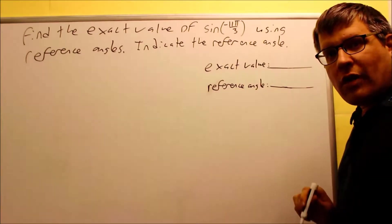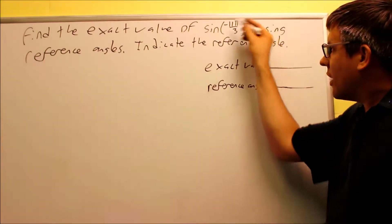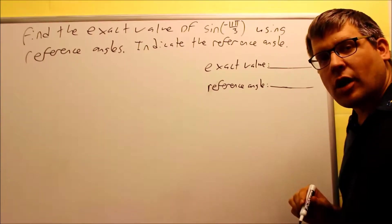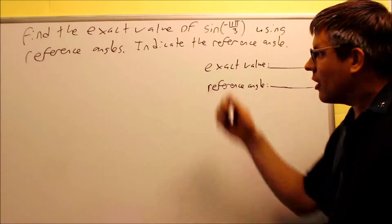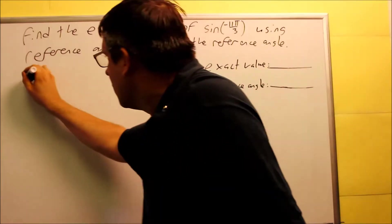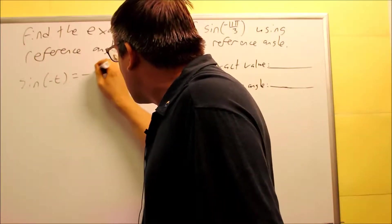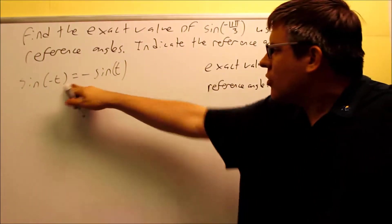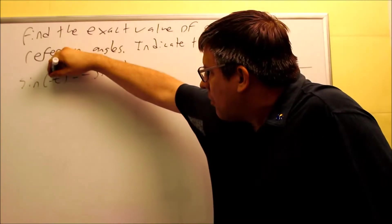Another one where you have a negative angle. We always want to take anything that has a negative angle in it and rewrite it as a positive angle by using the even and odd properties. The even and odd property that applies to this problem is sine of negative t equals negative sine t. That takes the negative angle and turns it into a positive angle.